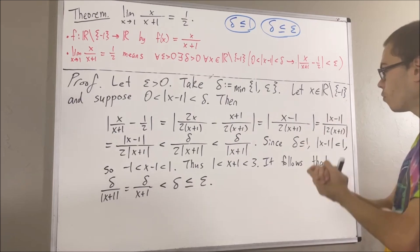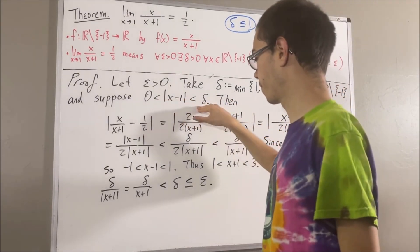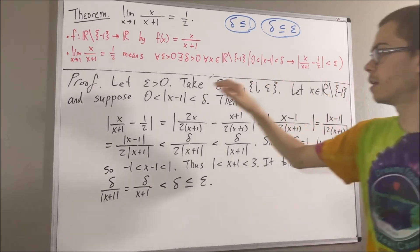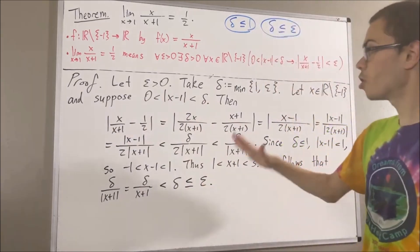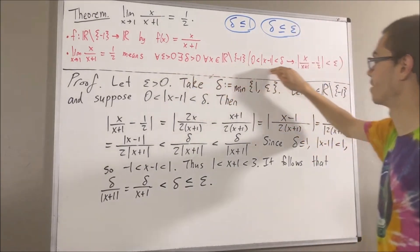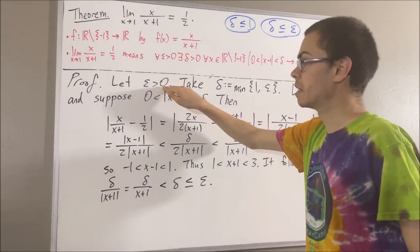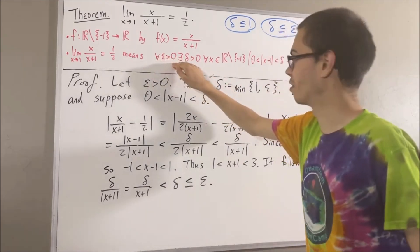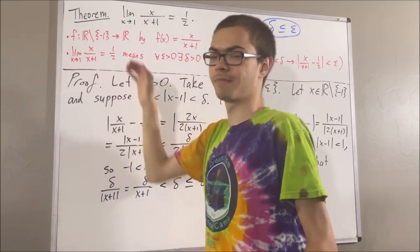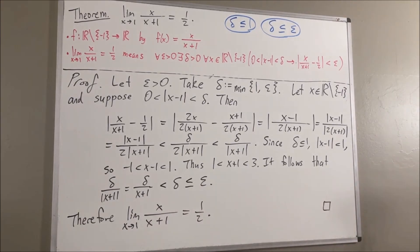Now let's put this all together. Under the assumption that x is a real number not equal to negative 1, it follows that if the hypothesis is true, then the absolute value of x over x plus 1 minus 1 half is less than epsilon. Since x is arbitrary, we have shown this for all real numbers x not equal to negative 1. We have found a value for delta which makes this statement true, and we showed this under the assumption of some arbitrary epsilon greater than 0. Since epsilon was arbitrary, we have shown for all epsilon greater than 0 the statement is true. So we have proven the entire statement, which means we have shown that this limit is true. This completes the proof.